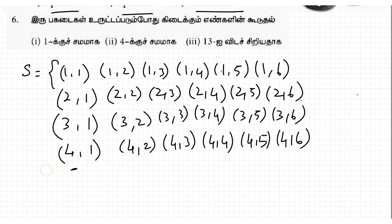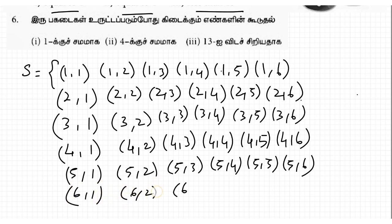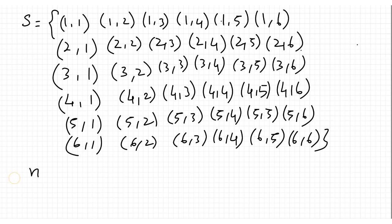Then (5,1), (5,2), (5,3), (5,4), (5,5), (5,6). Then (6,1), (6,2), (6,3), (6,4), (6,5), (6,6). So totally 36 elements. Number of sample space n(S) = 36.